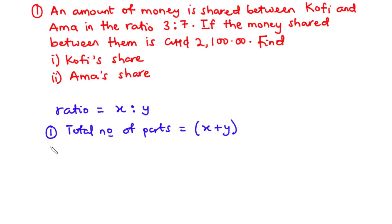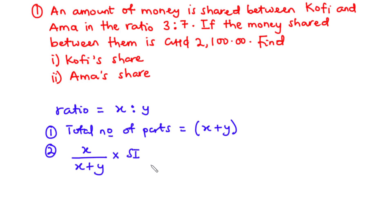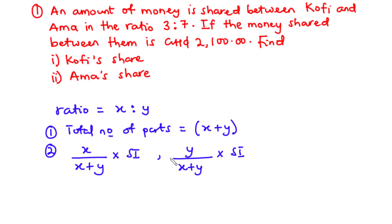Secondly, you need to find the part that corresponds to each individual. From the ratio, we are sharing the item between two individuals, which is why we have two values. The first part is x divided by the total (x + y), times the item to be shared. The second part is y divided by (x + y), times the item to be shared. You find the total number of parts by adding the ratio values, then distribute accordingly.